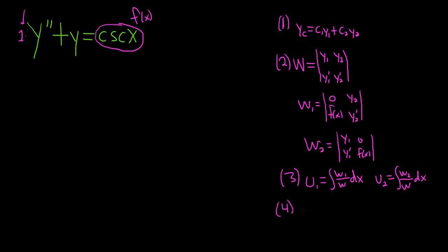The last step is to find, or almost the last step, the particular solution will be u1 y1 plus u2 y2. And finally, the very last step is the final answer, which is y equals yc plus yp. So these are the steps for variation of parameters. I wasn't going to go through them in this problem, I was just going to do the problem, but it's too late. I've already done it. Alright, so let's go ahead and work through this.